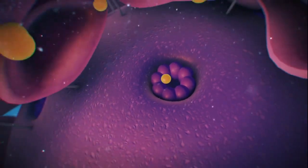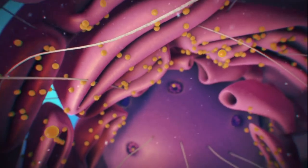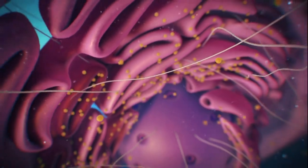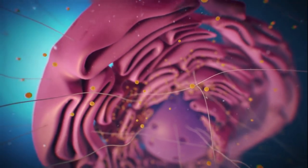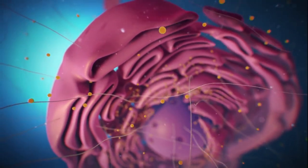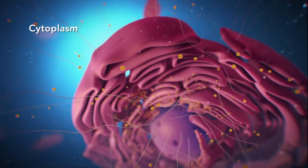After ribosomes leave the nucleus, they will have the important job of synthesizing or making proteins. Outside the nucleus, the ribosomes and the rest of the organelles float around in cytoplasm, which is the jelly-like substance.